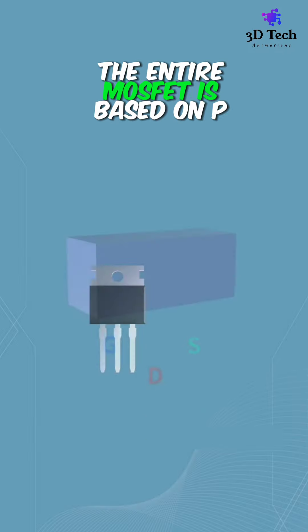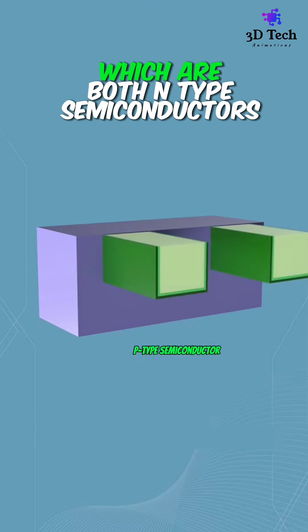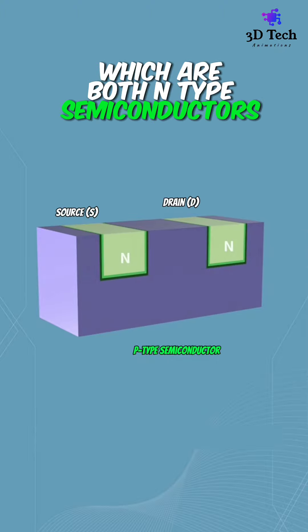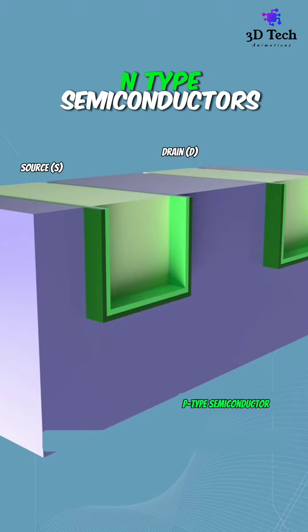The entire MOSFET is based on a P-type semiconductor. The source and drain terminals are embedded, which are both N-type semiconductors. A P-N junction is formed at the junction of P-type and N-type semiconductors.